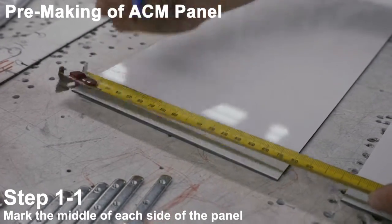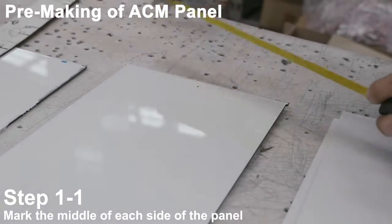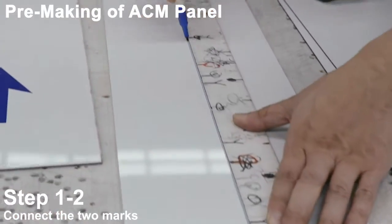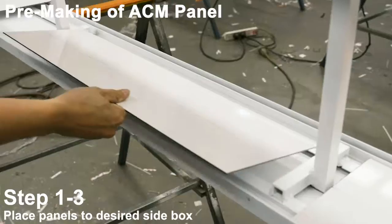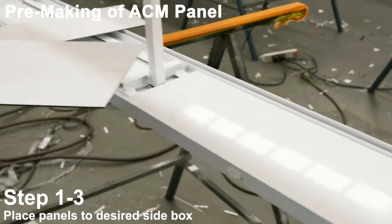Mark the middle of each side of the panel, connect the two marks, and place panels to desired sign bottles.